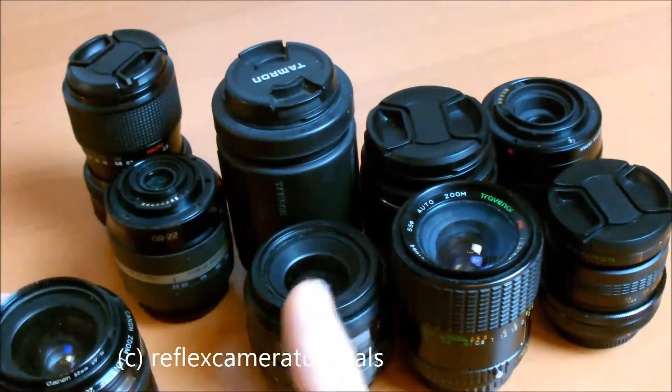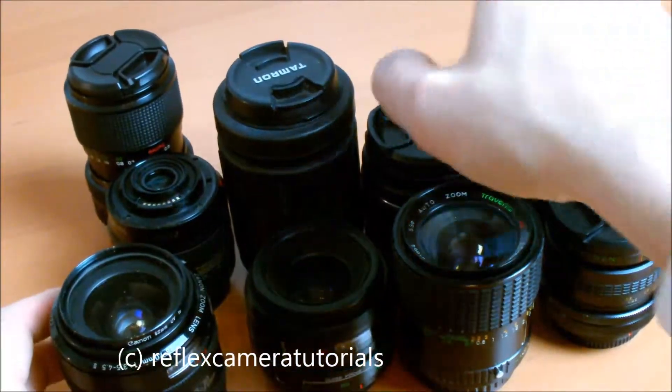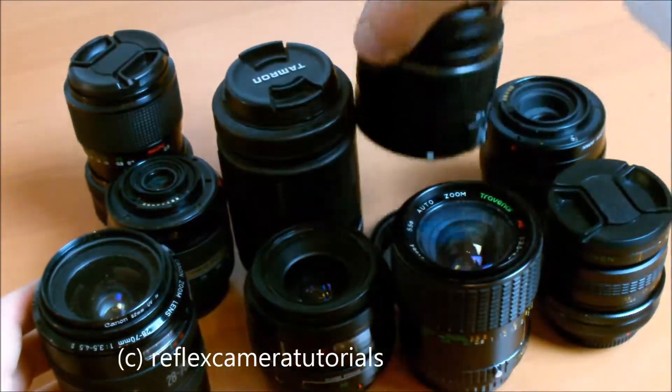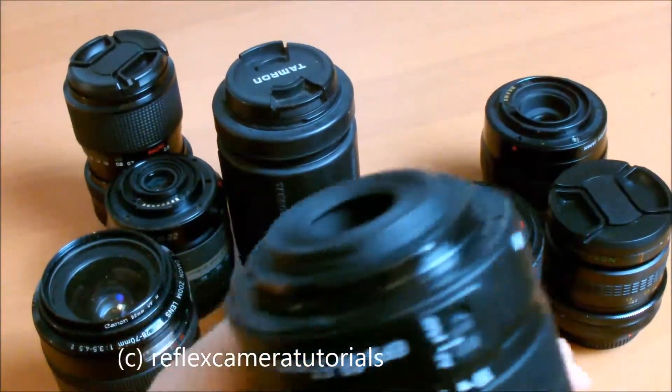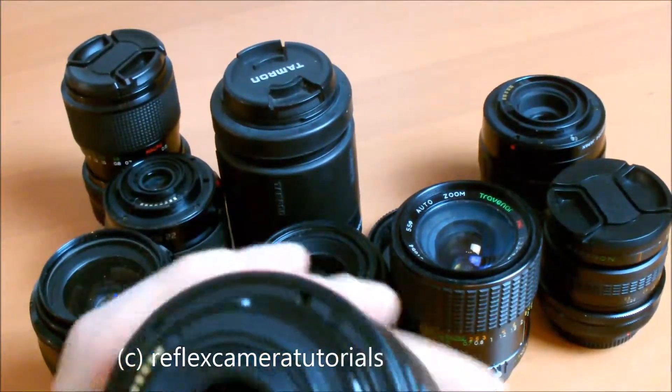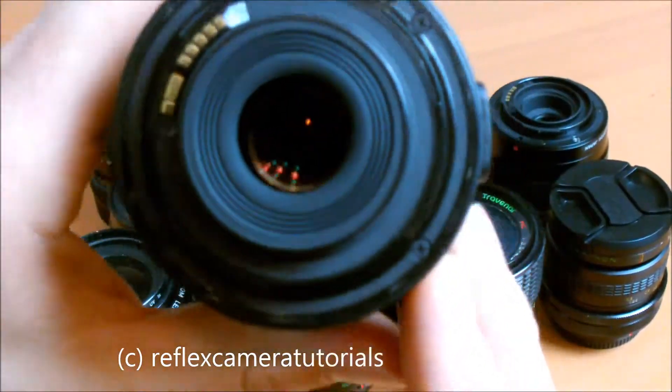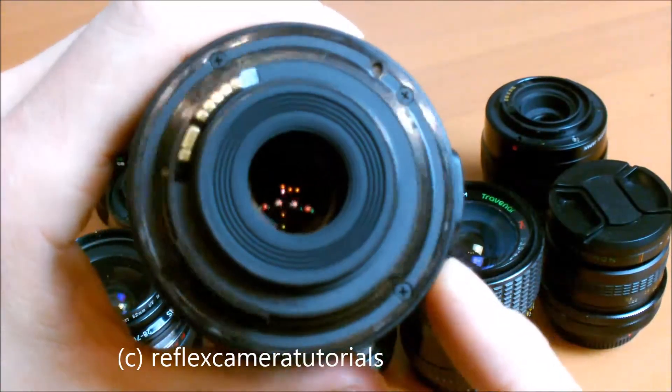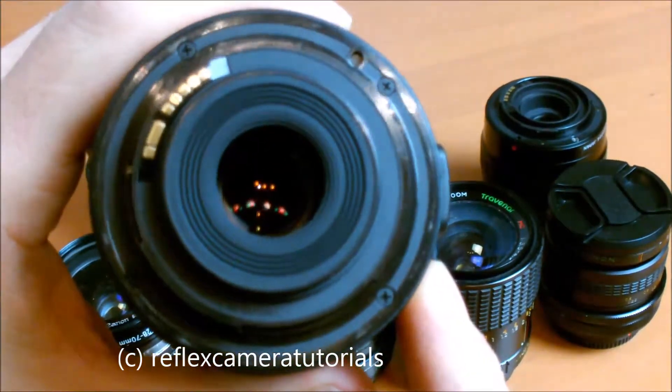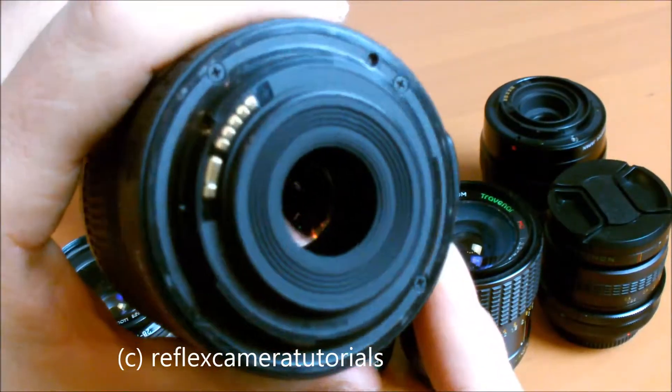The next one is the younger brother from this, the Canon EF-S lens mounting. It's compatible with the EF lens but only downgradable, so you can take an EF lens on an EF-S camera but not the other way.